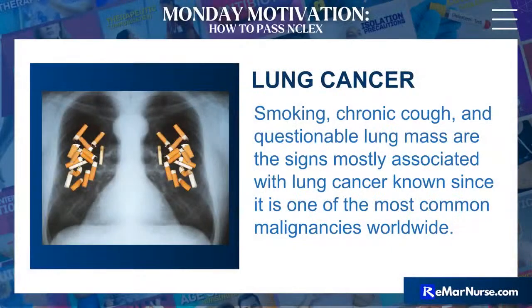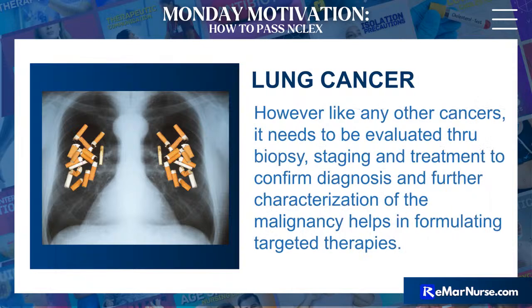When we talk about lung cancer, it is essentially a mass found in the lungs that is associated with smoking. It is one of the most common malignancies worldwide. When it comes to cancer, we have to be able to distinguish between cancer of the lungs that's fast-growing and cancer of the lungs that's slow-growing.